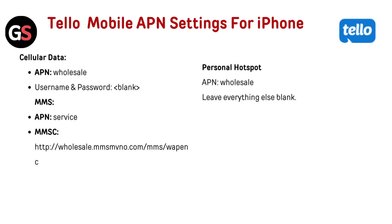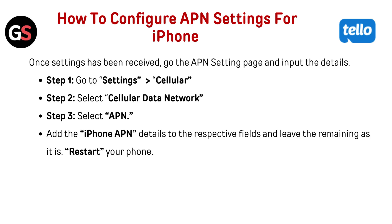Tello Mobile APN settings for iPhone — Cellular Data APN: wholesale. Username and password: leave blank. MMS APN: wholesale. MMSC: http://wholesale.mms.mvno.com/mms/wapenc. Personal Hotspot APN: wholesale. Leave everything else blank.